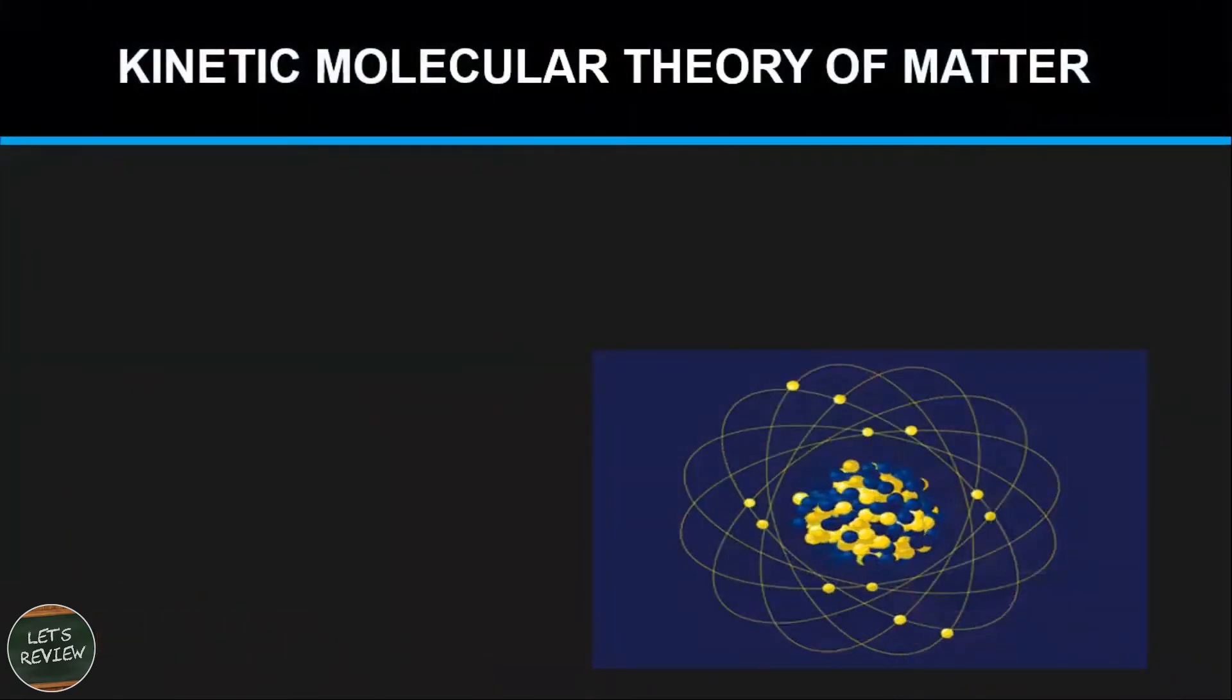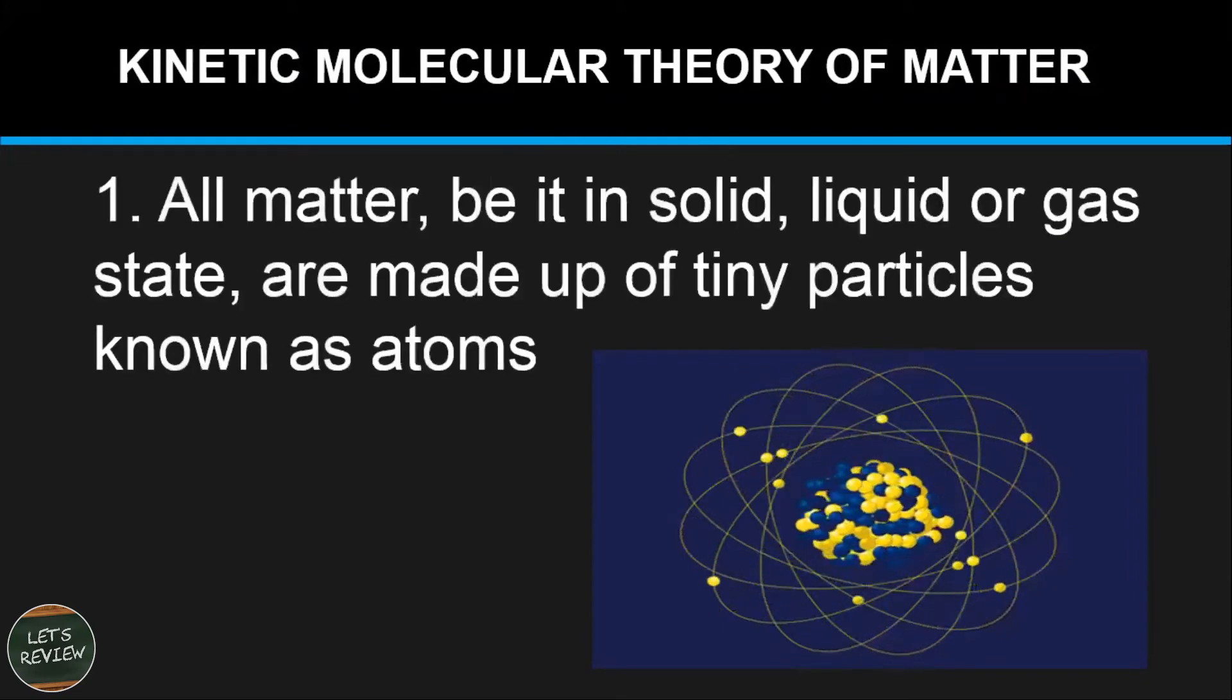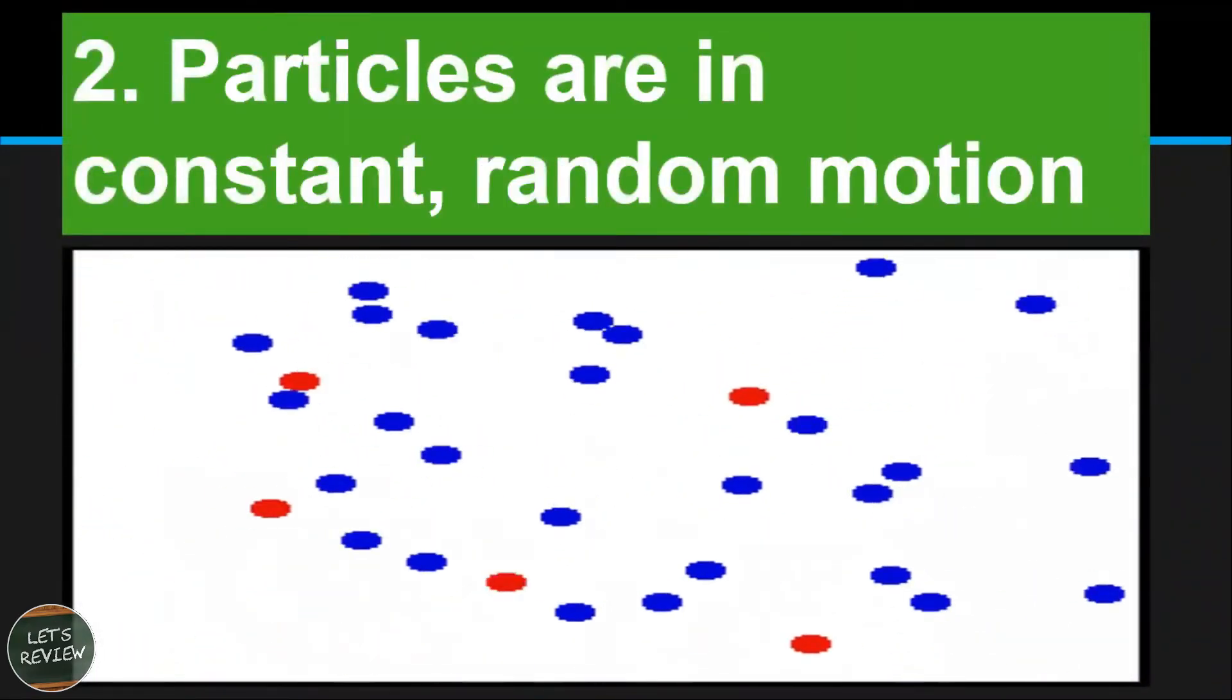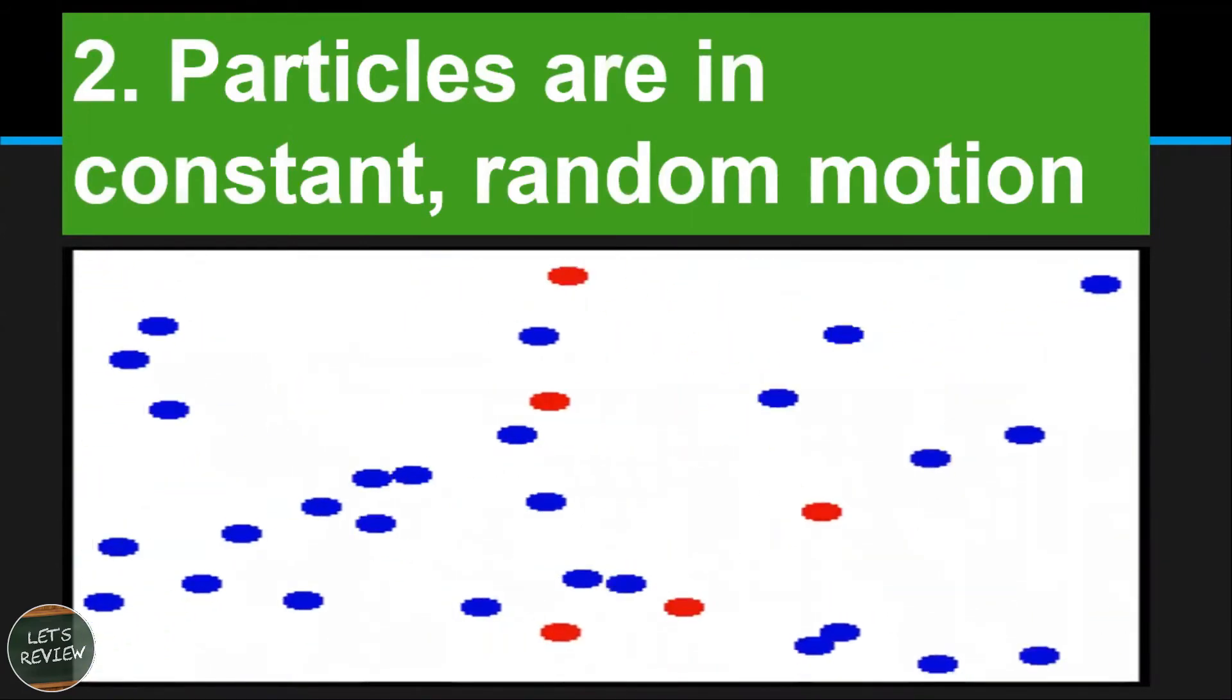Here are the kinetic molecular theory of matter: Number one, all matter, be it solid, liquid, or gas state, are made up of tiny particles known as atoms. Second, particles are in constant random motion.